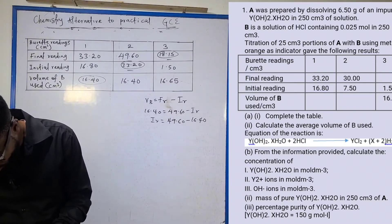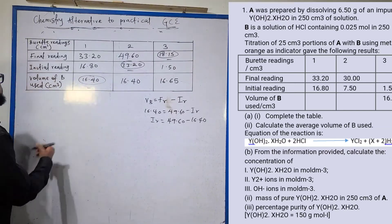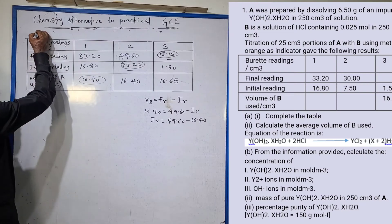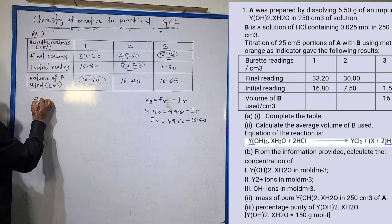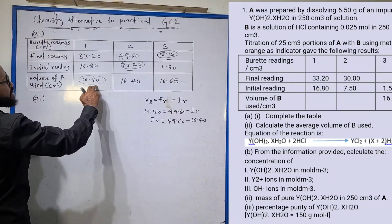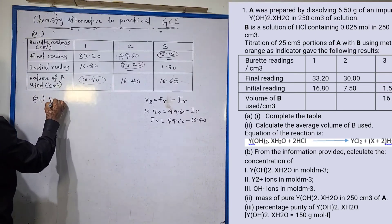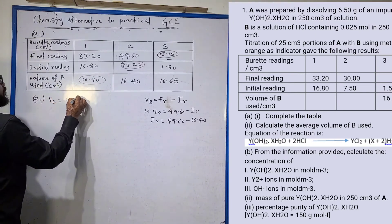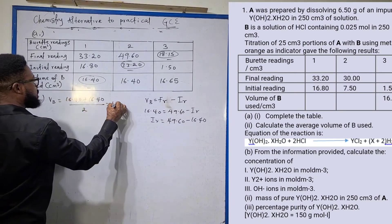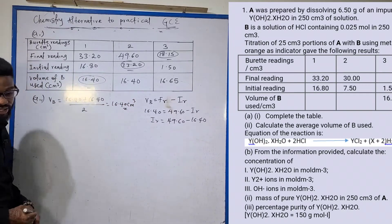We are told to calculate the average volume of B used — that is question A2. Looking at the values, A1 and A2 both read 16.40 and are consistent, while the rough titre looks far from these. So average volume of B used is 16.40 plus 16.40 divided by 2, which gives 16.40 cm³.